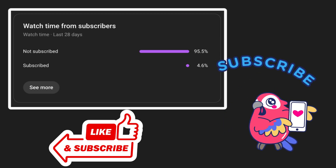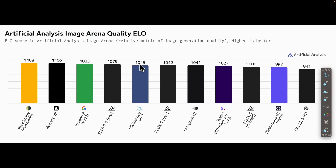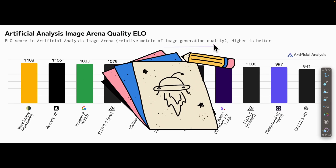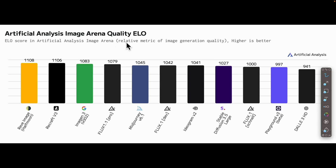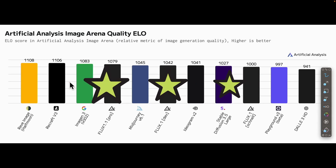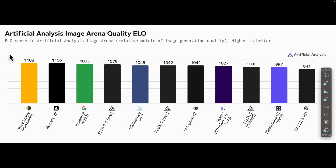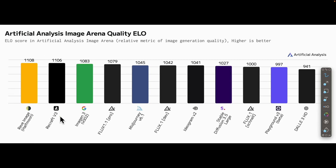First up, we're going to dive into the top AI models for image generation. Based on this chart, it shows us the ELO score, which is the metric for image generation quality — the highest score has the highest quality and the lowest score has the lowest quality. Based on this chart, it shows us the top 10 with the highest image generation quality. The top one is Rave Image from Half Moon, second by Recraft v3, Imagine 3 from Google, as well as Flux 1.1 Pro and Mid Journey.